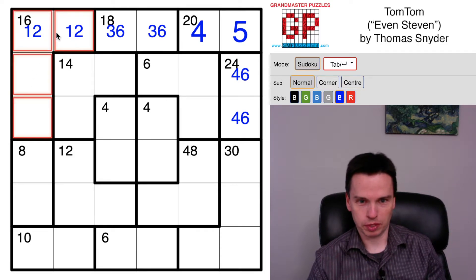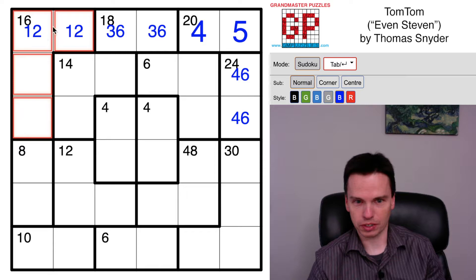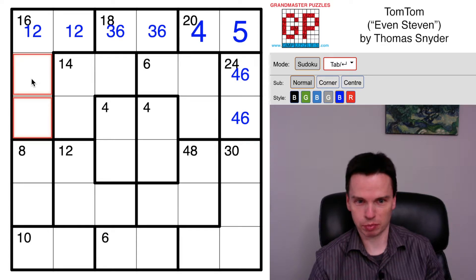Where 16 could initially be a sum, like 6 plus 5 plus 4 plus 1, it no longer can be. We have 2 and 1, that's 3, leaves behind 13, this can't be a sum of 13, so this has to be a product of 8 instead.